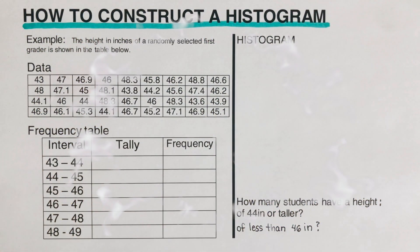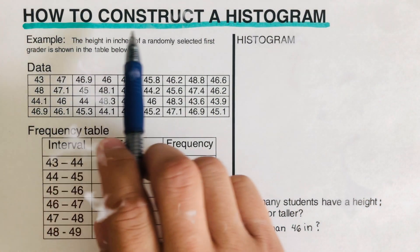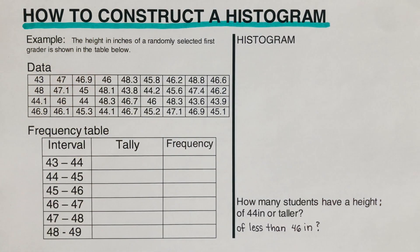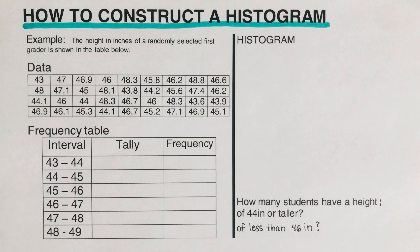Hello everyone. In this video we will be constructing a histogram. By definition, a histogram consists of rectangles whose area is proportional to the frequency of a variable and whose width is equal to the class interval.